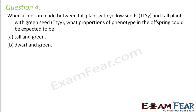Question number 4. When a cross is made between a tall plant with yellow seeds (heterozygous) and a tall plant with green seeds, where tall is heterozygous but green is homozygous, what proportions of phenotype in the offspring would be expected to be tall and green, or dwarf and green? Let us try to perform this cross.